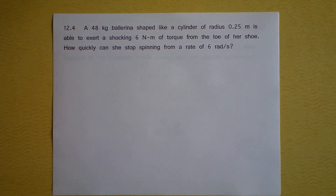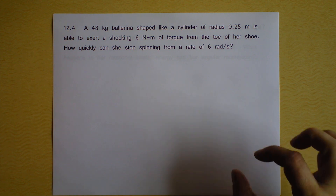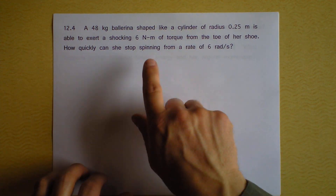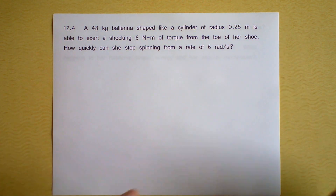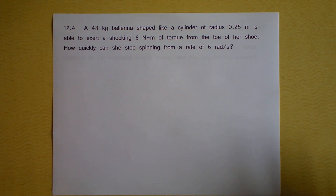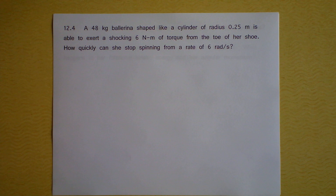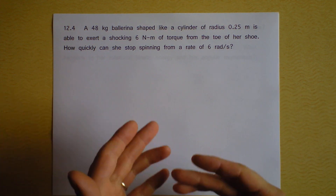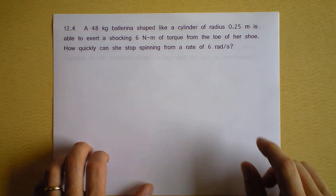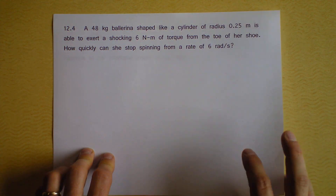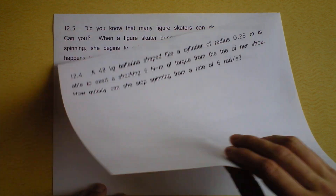Question four is about a ballerina. I had a student do an independent lab on a ballerina toe shoe. The contact area is tiny where the toe shoe contacts the floor, and it's amazing that you can get that much torque from such a small contact area. She's an extremely light ballerina, so that torque is fantastic and can cause her to start or stop spinning with just the torque from her toe. The calculation is: what time would it take to stop spinning if she's already spinning at six radians per second? She's only 48 kilograms.